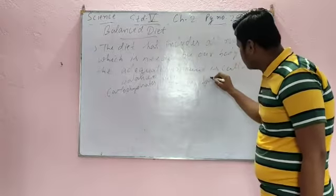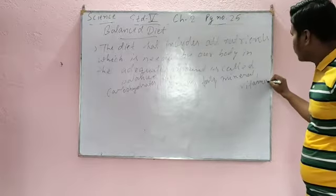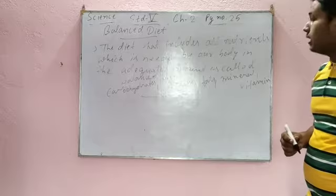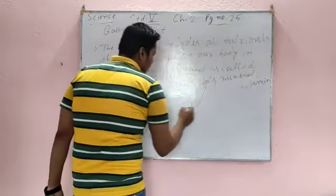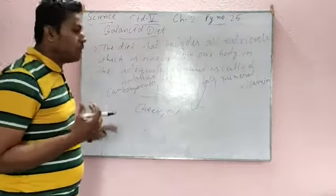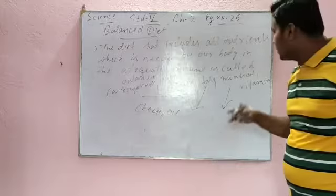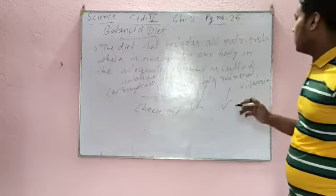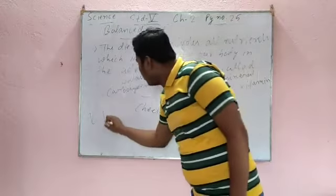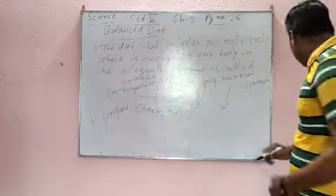Proteins, fats, minerals, and vitamins. The diet that includes all nutrients which is needed by our body but in the adequate amount. If you take fats, cheese, oil everyday, then your body will not work properly. If you take vitamin foods like meat everyday, milk everyday, then your body will not work properly. That's why it says you need them in adequate amount, means proper amount. You have to take all types of nutrients, not one type of nutrient.